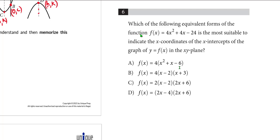Which of the following equivalent forms of the function f(x) is the most suitable to indicate the x coordinates of the x-intercepts of the graph of y equals f(x) in the xy-plane? So most suitable to indicate x coordinates of x-intercepts. So here's the thing about these questions. Yes, you could, if this were in the calculator section, you could try to graph this function. You could try to take this function and try to find the zeros either by factoring or by using some of the information that we talked about in terms of extracting information from standard form. That's what this is.